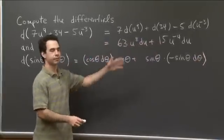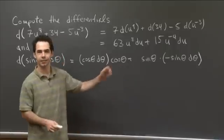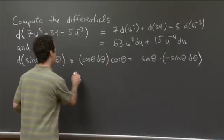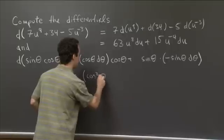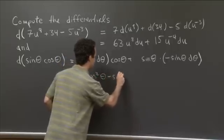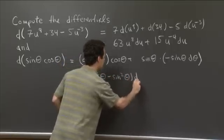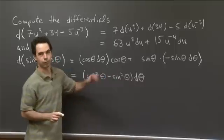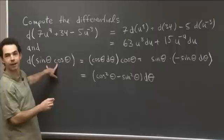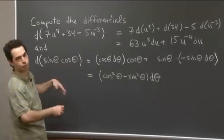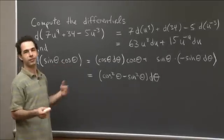OK, and now if we like, we can put this all together, factor out the d theta to the end, say, and we could rewrite this as cosine squared theta minus sine squared theta d theta. And of course, you could rewrite this a bunch of other ways using your trig identities, just like you could have started by writing sine theta cosine theta as 1 half sine of 2 theta before taking the differential.